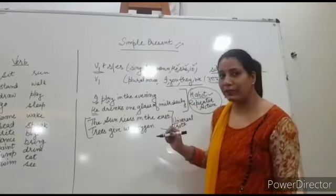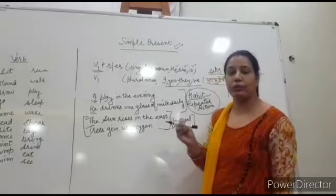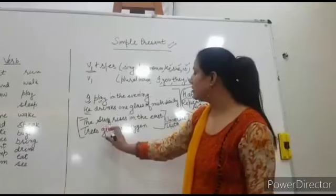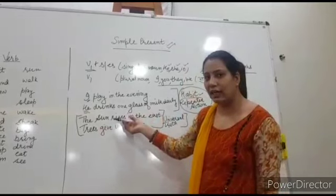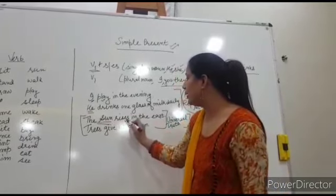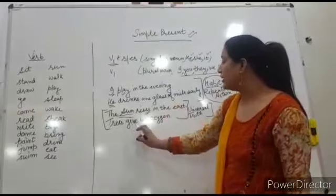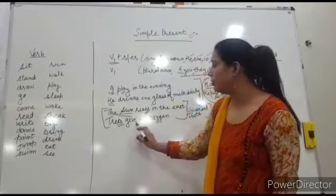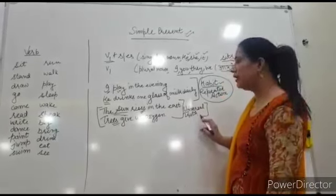What is the other use of simple present tense? That is universal truth. Universal truth means the truth that you can't change, that is universal for all. The sun rises in the east. We can't change this. Sun always rises in the east. With the sun, the sun is the singular word, so we use here rises. Trees give us oxygen. Here, trees is a plural word, so we use only V1. Trees give us oxygen. It is also universal truth.